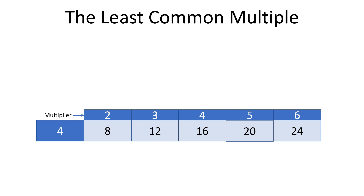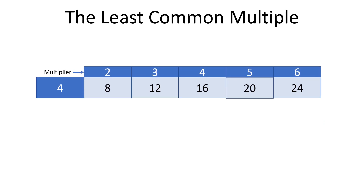Let's see how we can do that. In our example, we have one fraction with six in the denominator and the other fraction has four in the denominator. Let's list multiples of four and six. So we have eight, twelve, sixteen, twenty, and twenty-four as multiples of four.